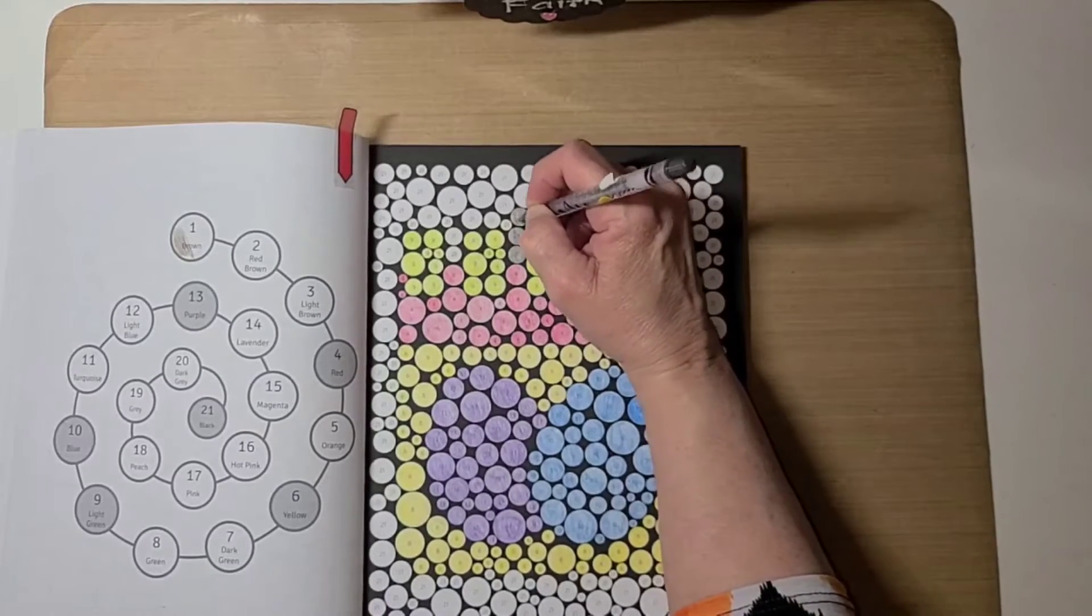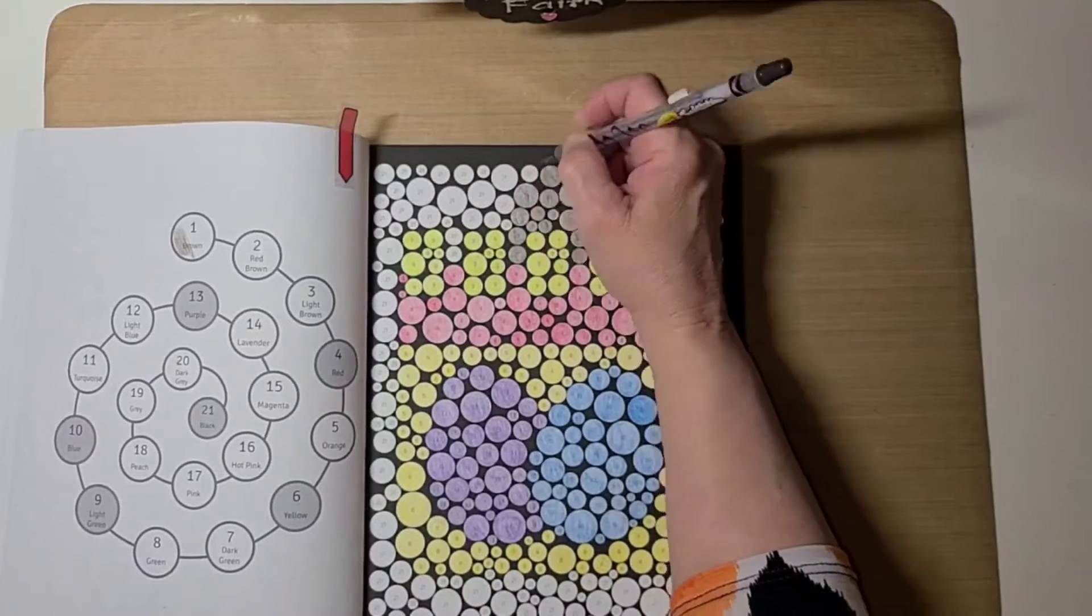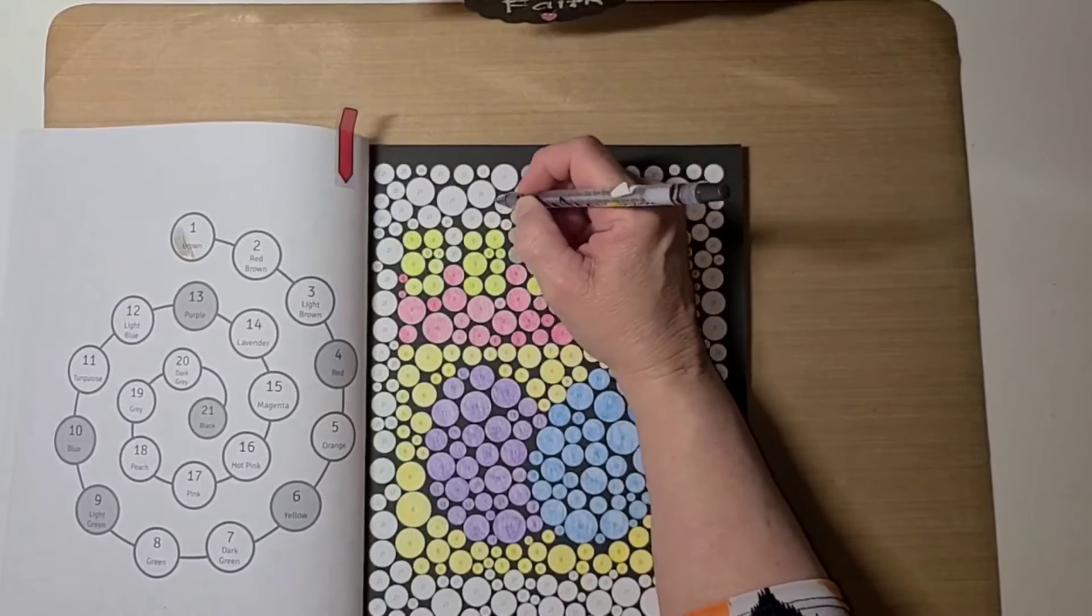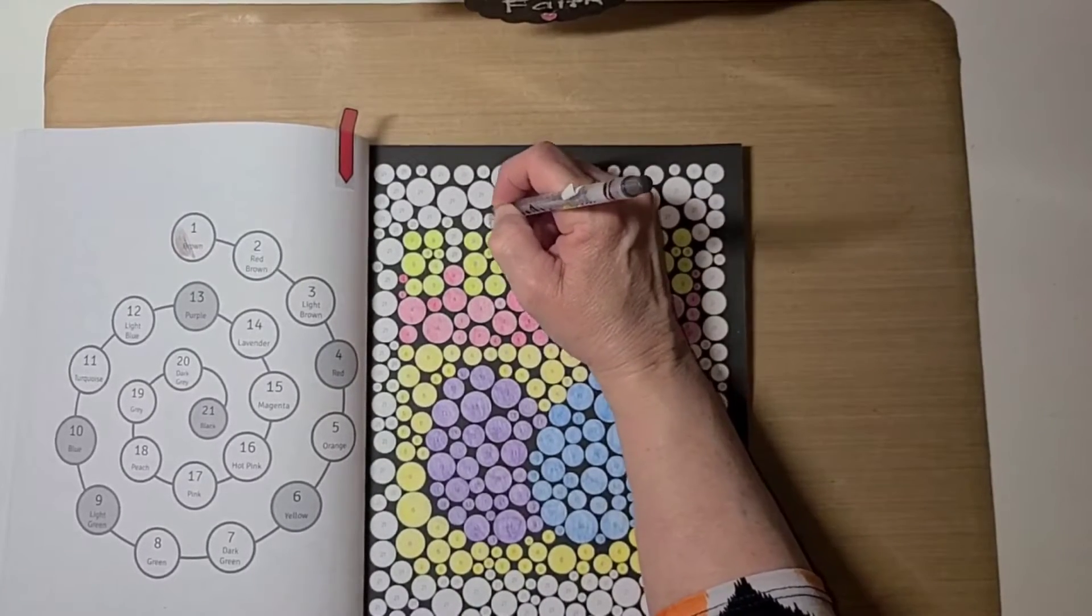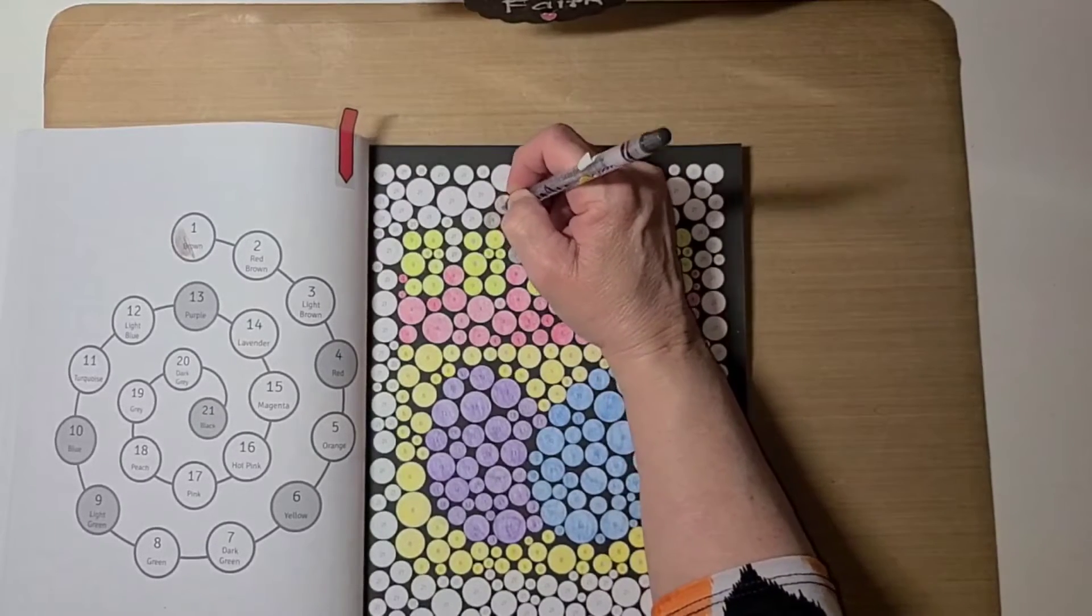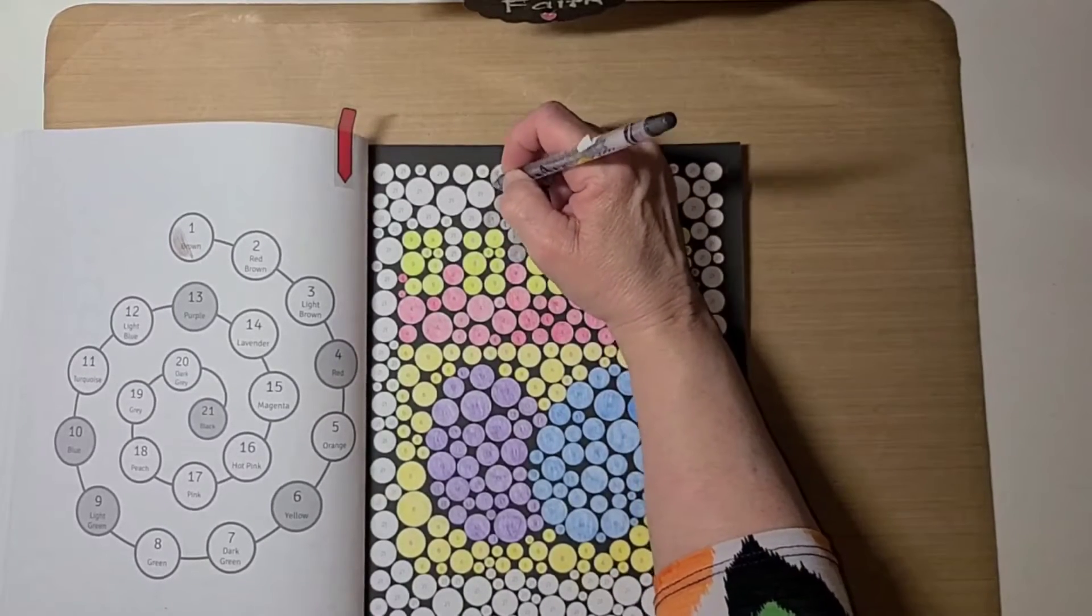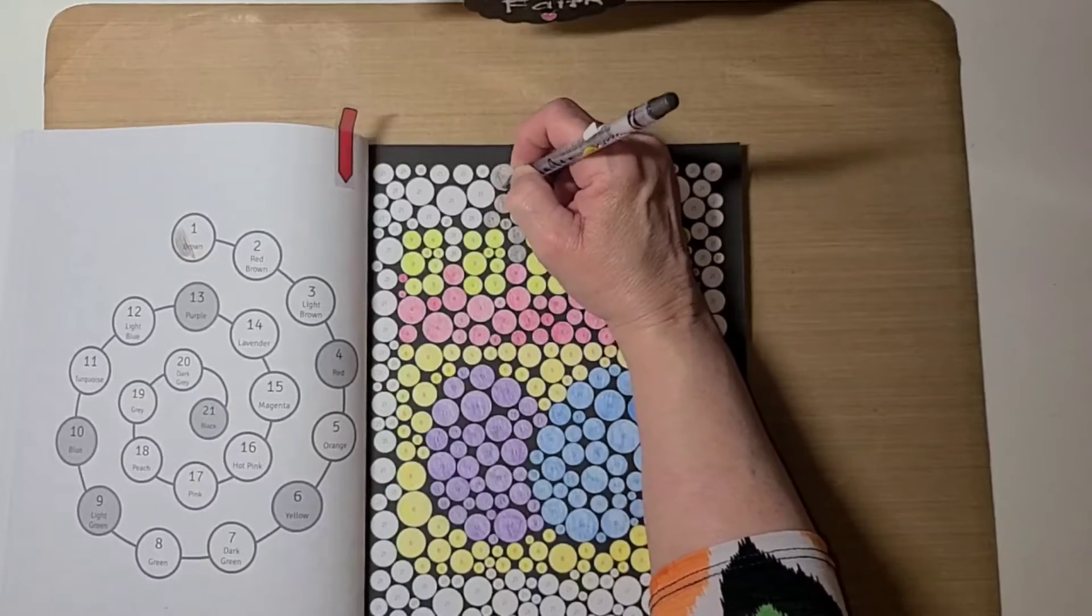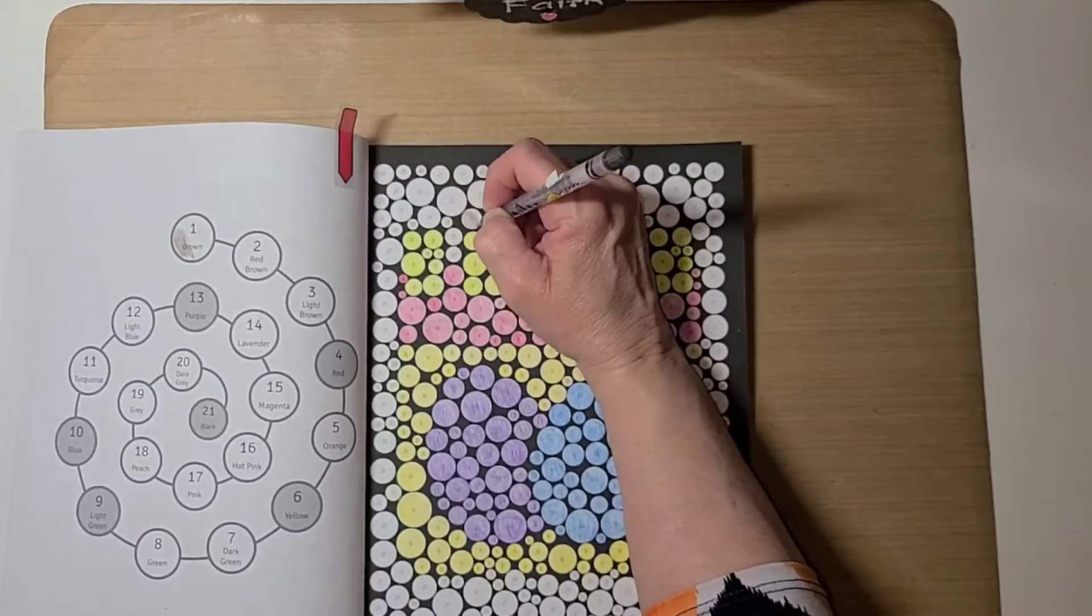The coloring helps me tremendously. I color and I diamond paint and I also have a doll hobby where I collect all different kind of dolls. I also collect the reborn dolls that look like real babies and I sit and rock them, I change their clothes and do videos showing the clothes that I change them in.